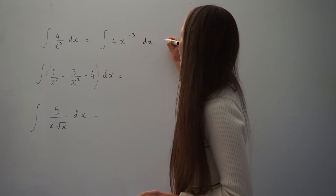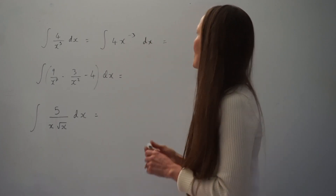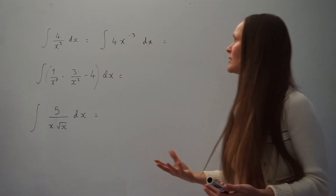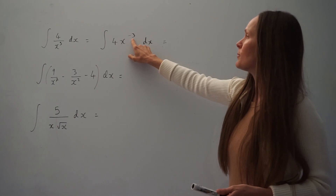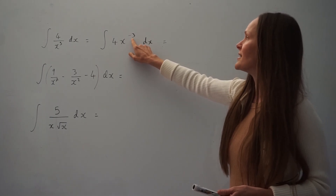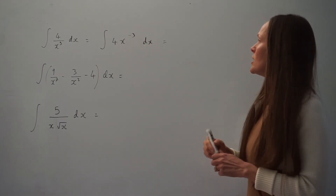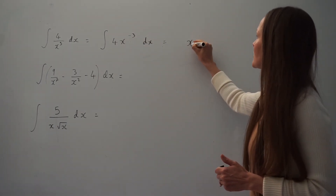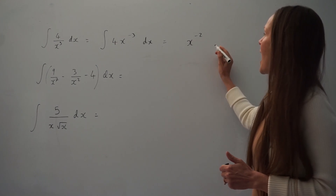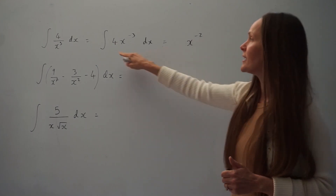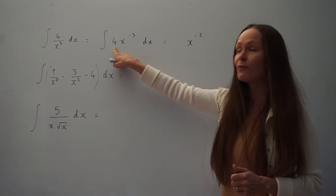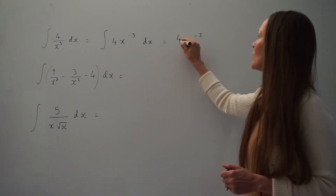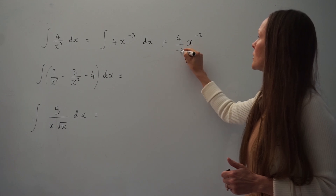If I integrate this, remember you're raising the power by 1. So negative 3 plus 1 is negative 2, giving x to the power of negative 2. Then you're dividing the coefficient 4 by the new power, which is negative 2.